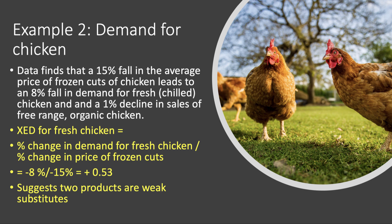Always put the formula in — you'll get credit for that in the exam, even if your workings prove to be inaccurate. There's been an 8% fall in demand for fresh chicken on the back of a 15% fall in the average price of frozen chicken — fresh chicken sales falling because frozen chickens have become cheaper. Minus 8 divided by minus 15 gives a coefficient of plus 0.53. Both products fell together, suggesting these two products are weak substitutes. The coefficient is positive, so they're substitutes, but it's not a high cross-price elasticity, suggesting fairly weak substitutability. Consumer preferences may well be fairly fixed across different income ranges.